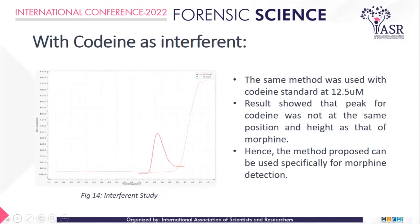I also did an interferent study using codeine, specifically at 12.5 micromolar concentration. It could be seen that the peak with codeine was at a different position and at a different height. So it can be concluded that this particular method for morphine can be used specifically for morphine, as it is not giving the same peak at the same position and same height for any other interferent that can be present. Codeine is the most related one, as it is from the same drug group.